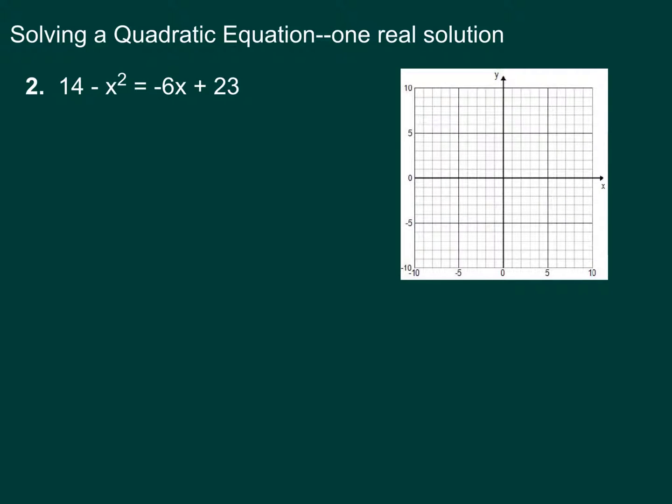So first off, we have to write this in standard form because we cannot solve this until it's written in standard form. So that means we want a quadratic equal to zero. In order to get this equal to zero, that means we need all terms on one side. I suggest you do it on the side that will make a positive, because that's just always nicer for us. So we are going to take everything to the right side. If I add x² to both sides and subtract 14, I'm going to do this in one step.